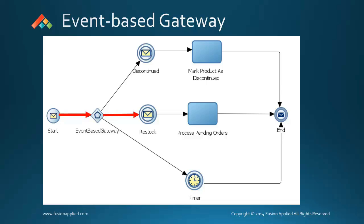It differs from an exclusive gateway in that instead of choosing a path based on expressions, it's going to choose a path based on the receipt of a message.